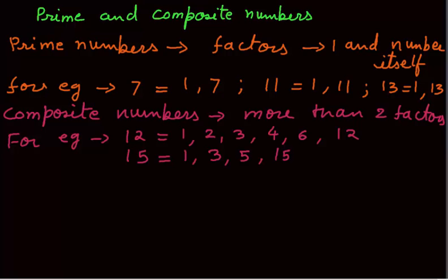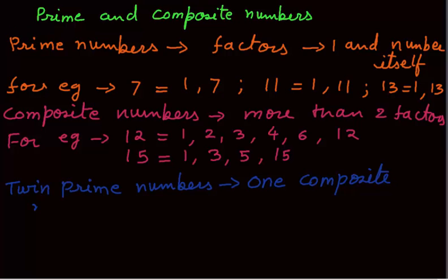Now we will consider twin primes. Twin prime numbers are two consecutive prime numbers with one composite number between them.